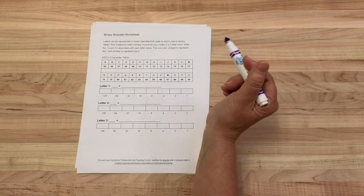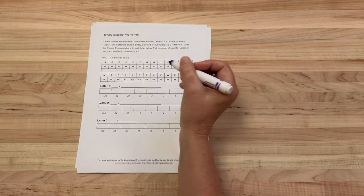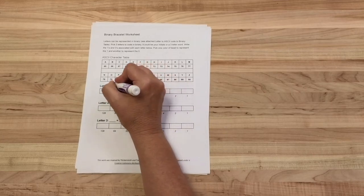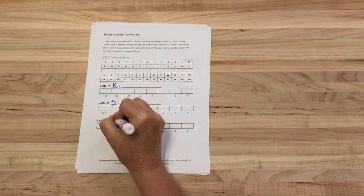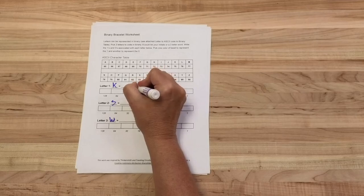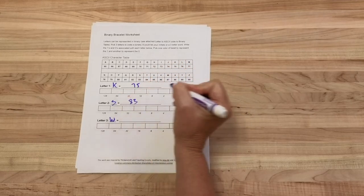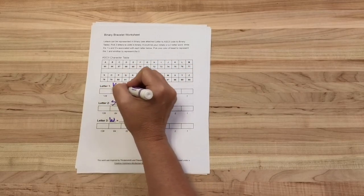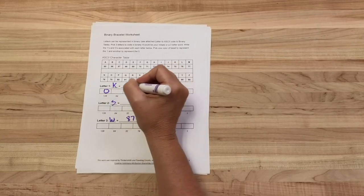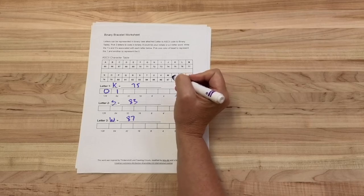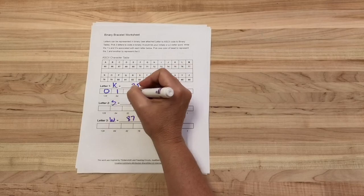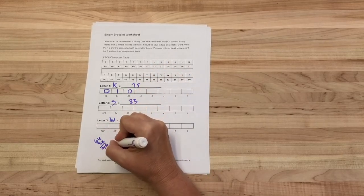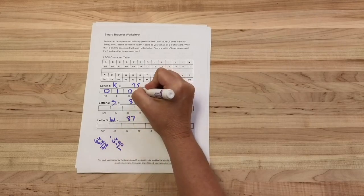So for either the binary bracelet or the bookmark, you're going to pick three letters - it could be your initials, it could be a three-letter word, but basically three letters. I'm going to pick my initials, KSW, and then I'm going to figure out what K is (75), what S is (83), and what W is (87). And then I can calculate this. I've got 75, which is less than 128, but then 64 - 75 is greater than 64. What about 64 plus 32? No, that's too big. Plus 16? No, too big. Plus 8?